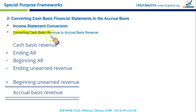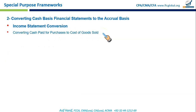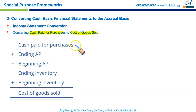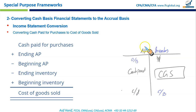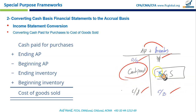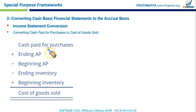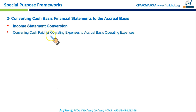Similarly, to convert cash paid for purchases to cost of goods sold (COGS), take cash paid to acquire inventory items, add ending accounts payable, deduct opening accounts payable, add beginning inventory, and deduct ending inventory to get COGS. An alternative T-account approach using a combined accounts payable and inventory account gives the same result — cost of goods sold as the balancing figure.